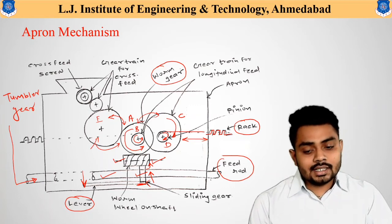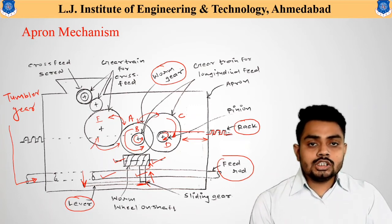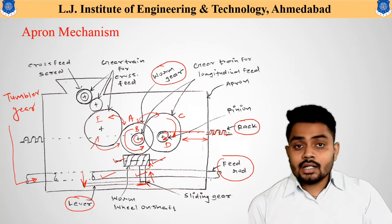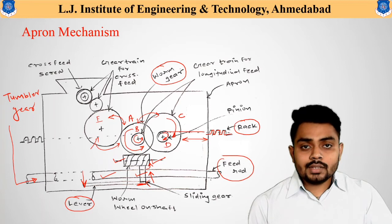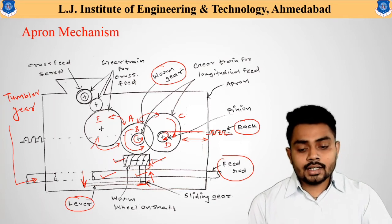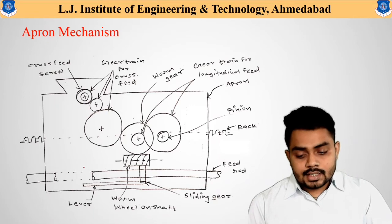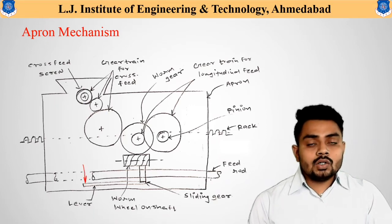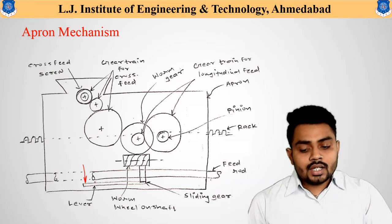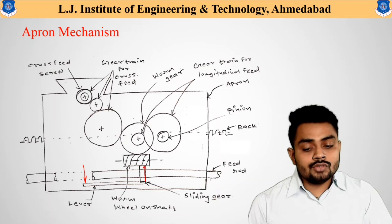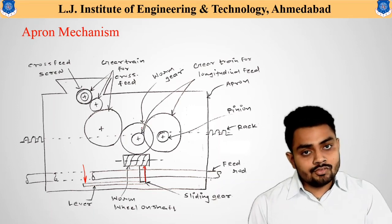We now understand how longitudinal automatic movement is obtained using the apron mechanism. For crosswise movement, load is applied on the lever; this connects the sliding gear to the worm wheel, and the worm wheel is connected to the worm gear.